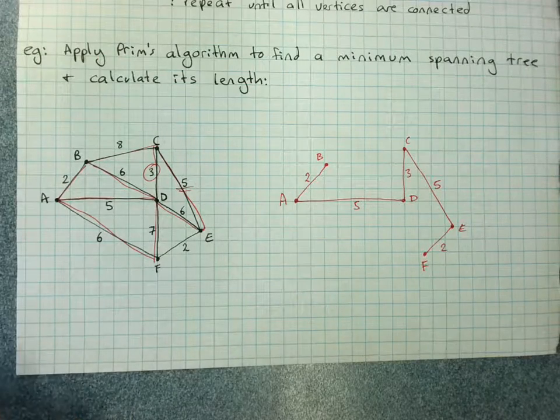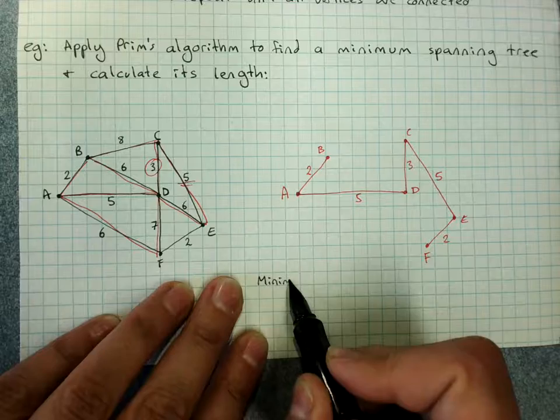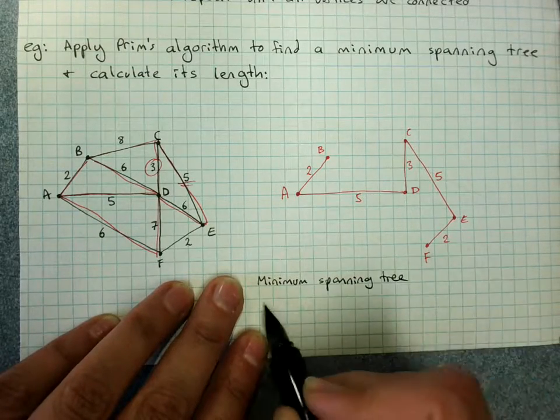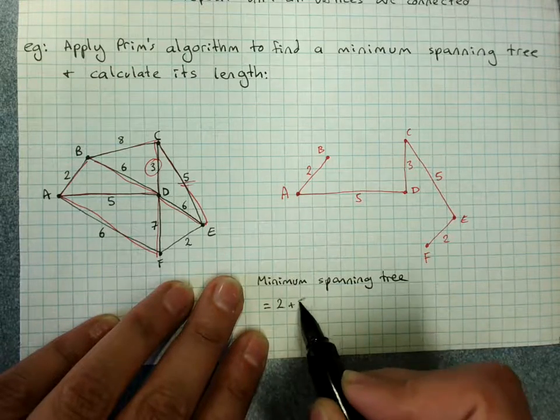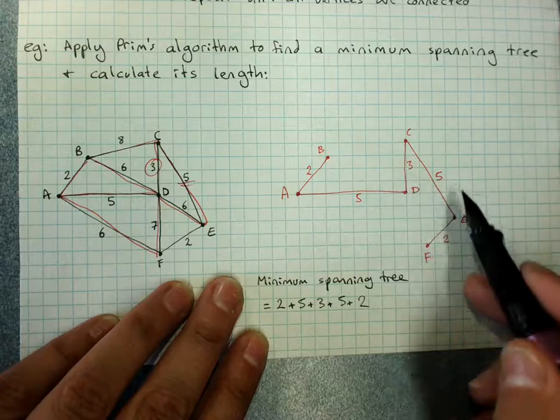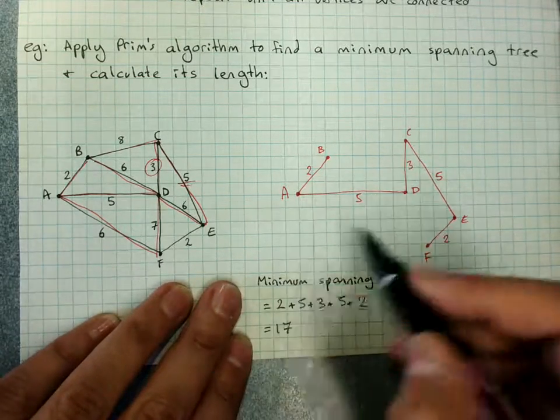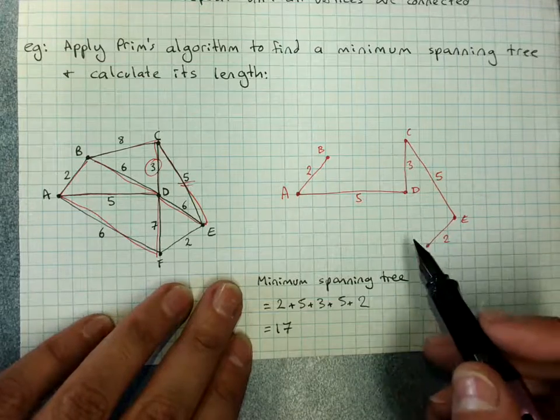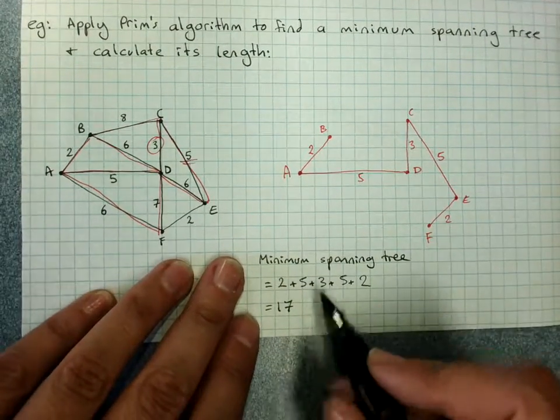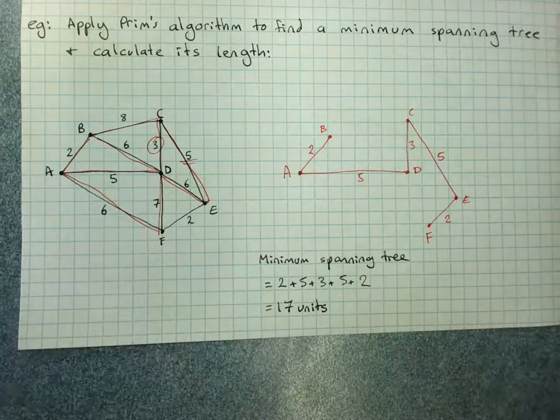And of course, since they asked us to find the length, we'd show our working: 2, 5, 3, 5, 2, equals 17. They didn't tell us what we're measuring this in. This could be time or distance in meters or kilometers or whatever. So if they didn't tell us, we just say units. So that's a minimum spanning tree.